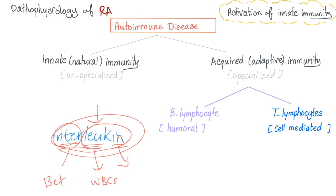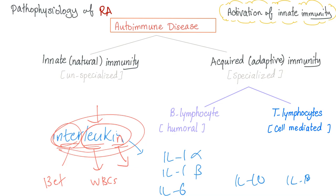Examples of interleukins involved in rheumatoid arthritis: interleukin-1 alpha, interleukin-1 beta, interleukin-6, interleukin-10, interleukin-18, and many others.